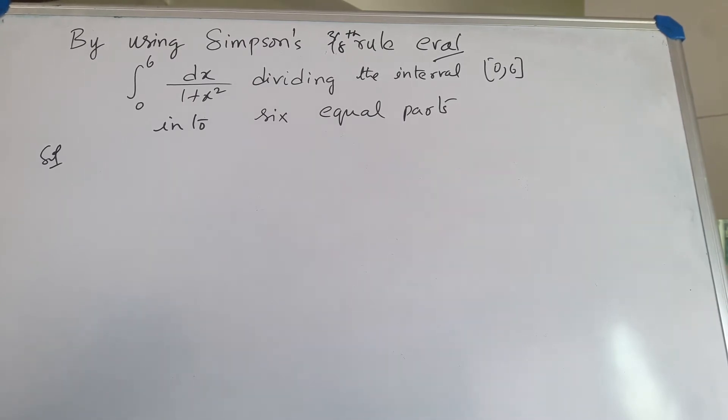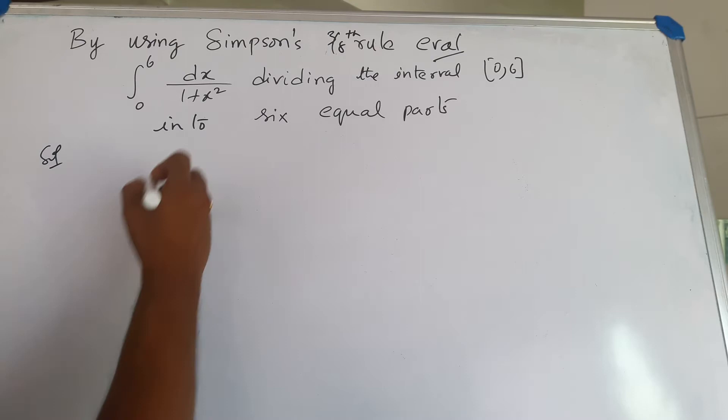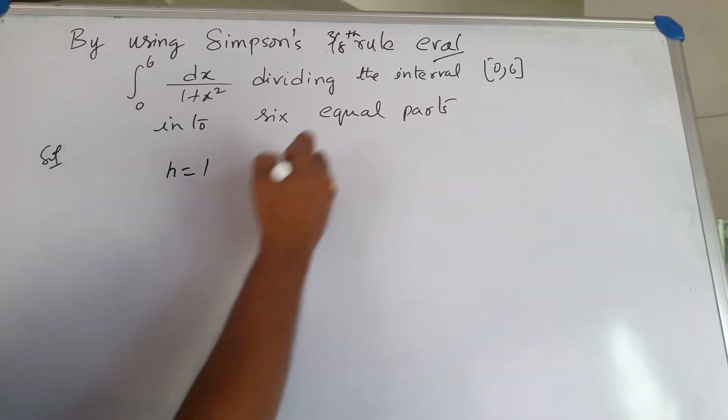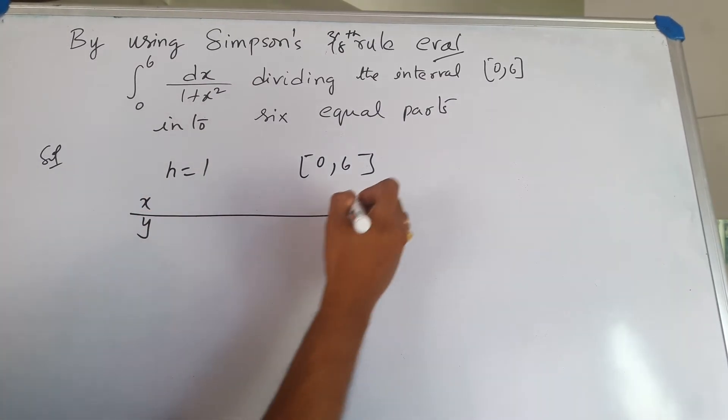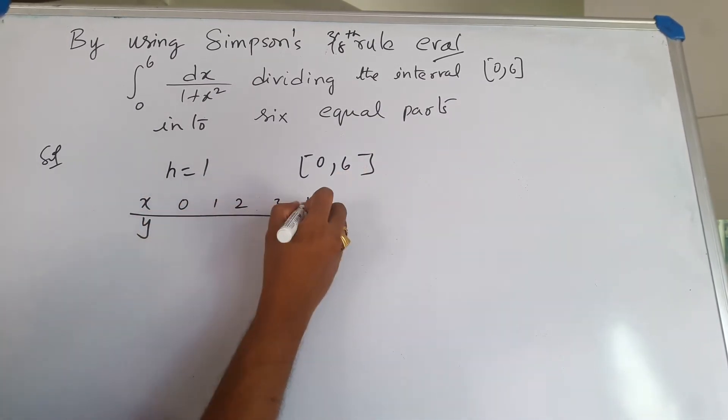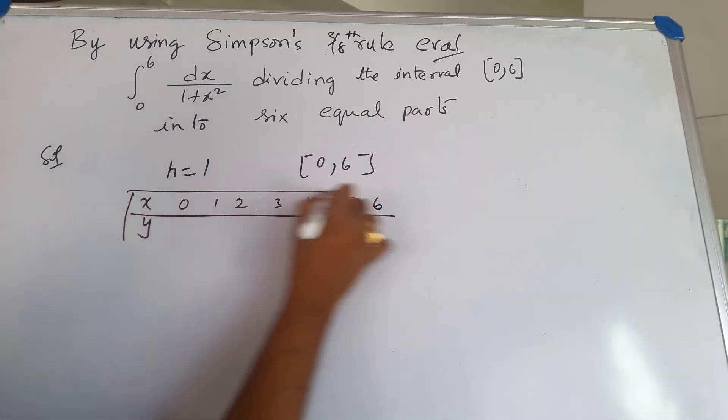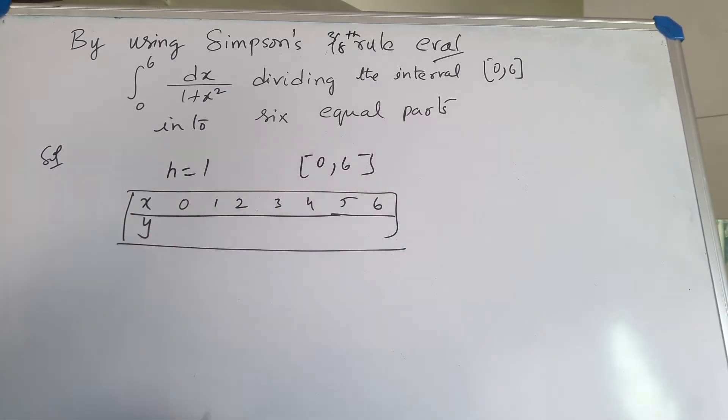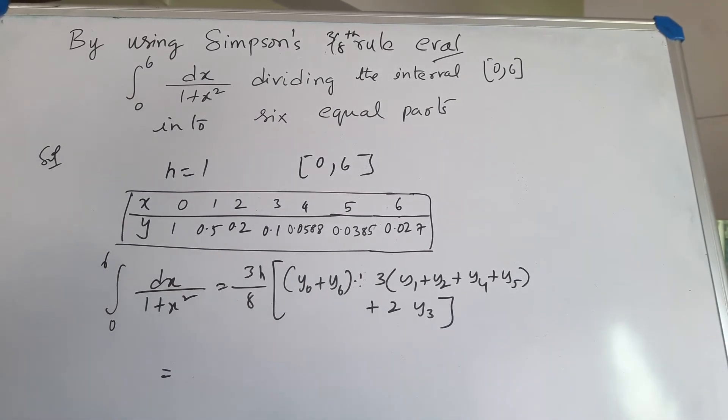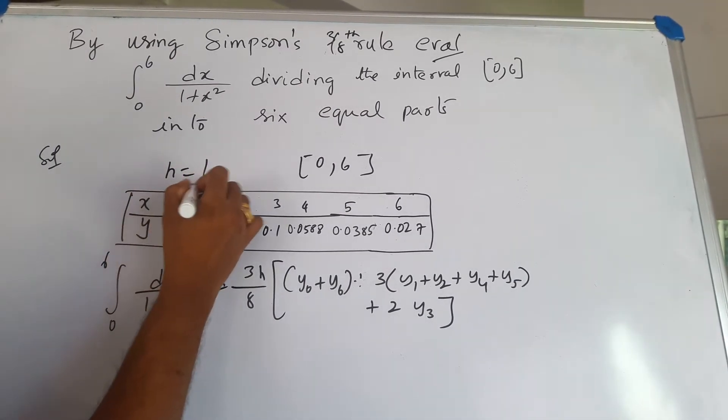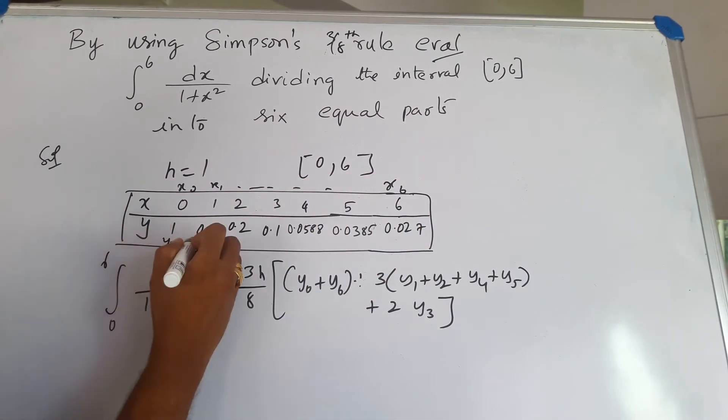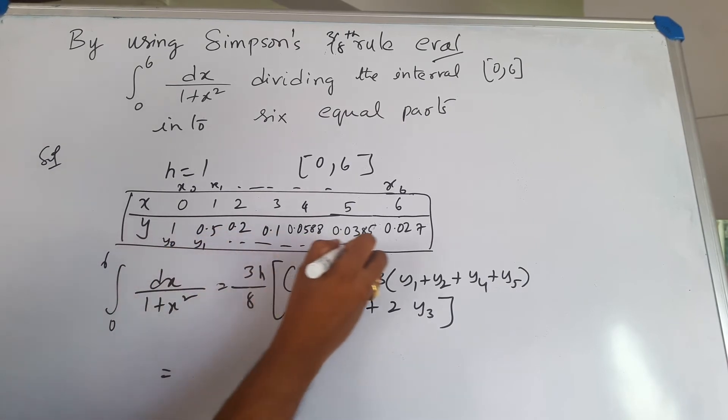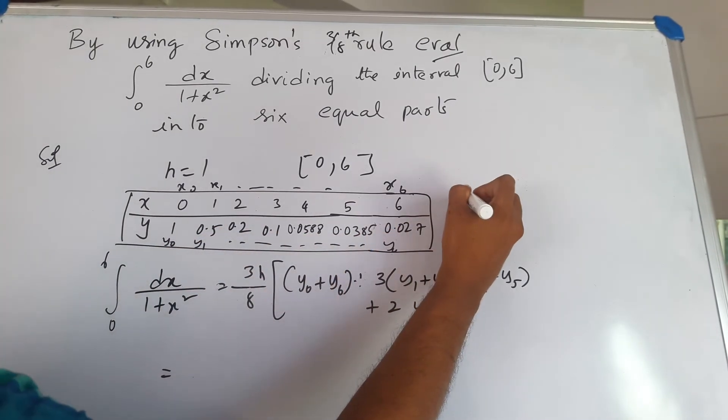By using Simpson's 3/8 rule, evaluate the integral 0 to 6 of dx by 1 plus x squared, dividing into 6 equal parts. Again here, h is equal to 1 over the interval 0 to 6. The corresponding table: x values 0, 1, 2, 3, 4, 5, 6. Now again we have x0, x1 through x6, corresponding to y0, y1 through y6.